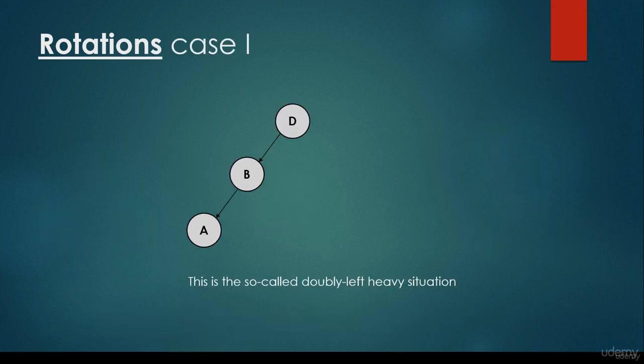Let's specify the concrete situations. We have case 1, the so-called doubly left-heavy situation, where we have a root node, and the root node has a left child, and this left child has another left child. For example, the root node is node D, then node B, and node A.